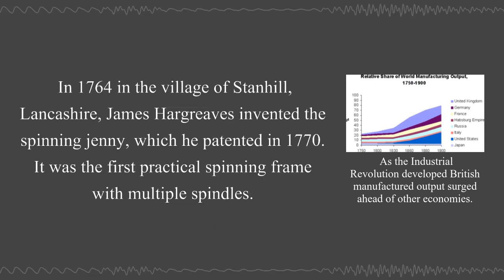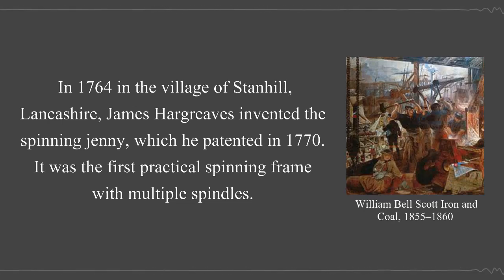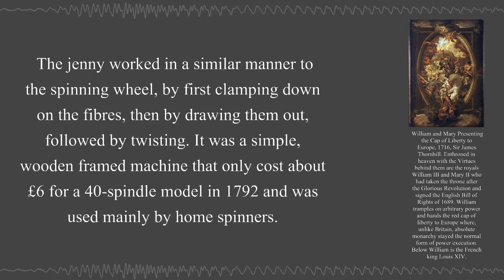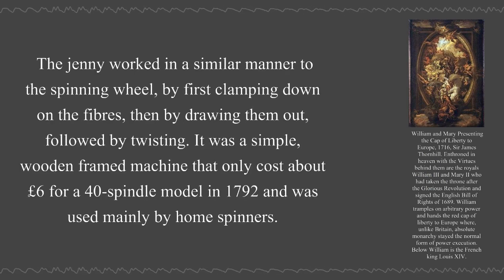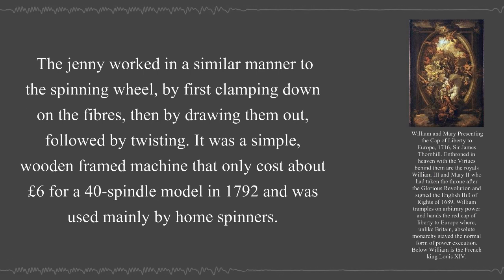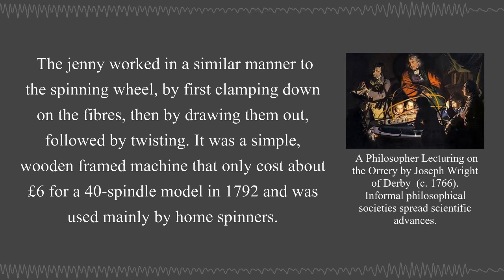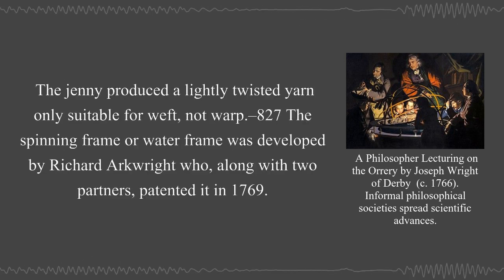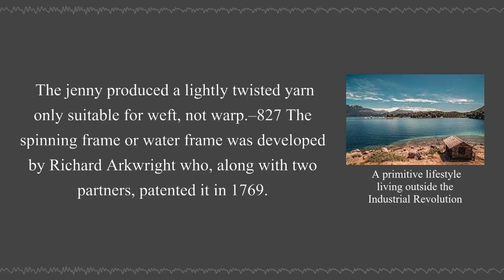In 1764, in the village of Stanhill, Lancashire, James Hargreaves invented the spinning jenny, which he patented in 1770. It was the first practical spinning frame with multiple spindles, working by first clamping down on the fibers, then drawing them out, followed by twisting. It was a simple wooden frame machine costing about six pounds for a 40-spindle model in 1792, used mainly by home spinners. The jenny produced a lightly twisted yarn only suitable for weft, not warp.